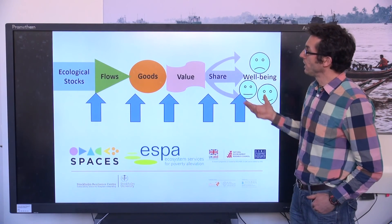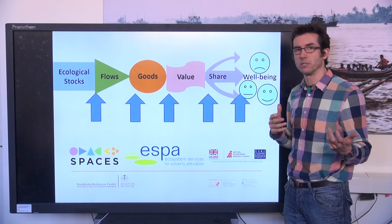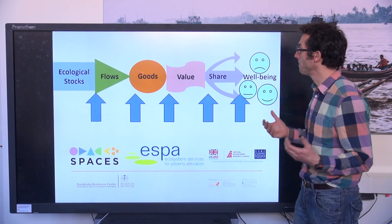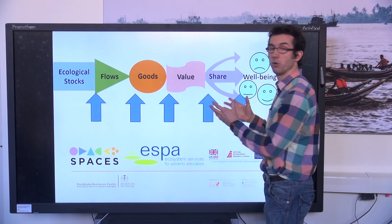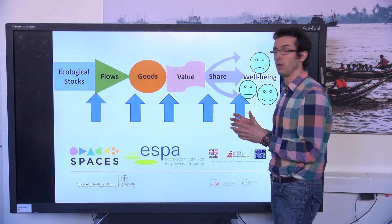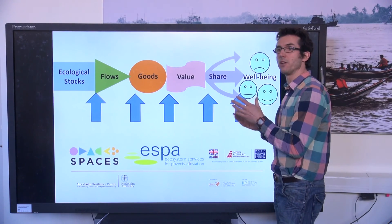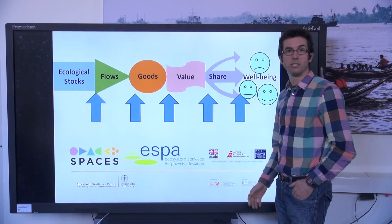So we suggest that this framework can really help us to unpick that relationship between ecosystems and human well-being, and that by understanding ecosystem services in this way, we can think about possible points of intervention or critical points in this chain which underlie the relationship between human well-being and changes in ecosystems.